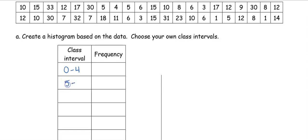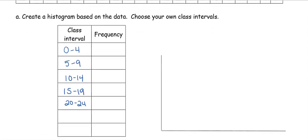So our next class is going to be from 5 to 9 cousins, 10 to 14, 15 to 19, 20 to 24, 25 to 29, and 30 to 34.